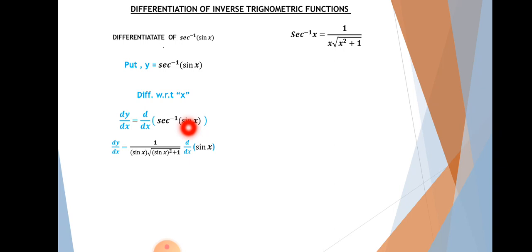Whatever number we have written as inverse, x or any variable, we write that squared under the square root, plus 1.